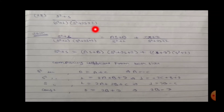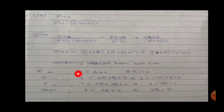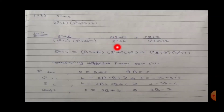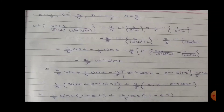Question 18: (s²+s)/[(s²+1)(s²+2s+2)]. Writing into partial fractions: (As+B)/(s²+1) plus (Cs+D)/(s²+2s+2). Taking LCM and comparing coefficients: s³ term gives A+C=0; solving all equations gives A=3/5, B=1/5, C=-3/5, D=-2/5.